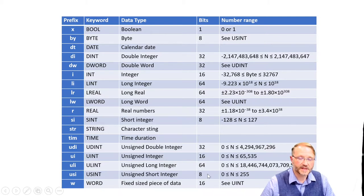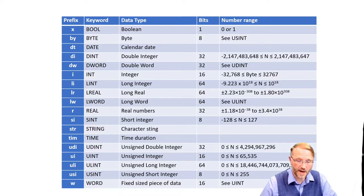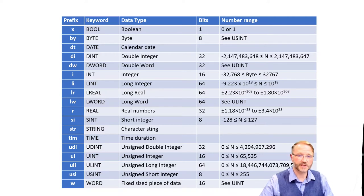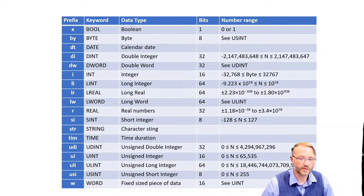These unsigned data types will hold values from 0 to 2 to the n minus 1, where n is the bit width. So for 8 bits, it holds from 0 to 2 to the 8th, which is 256, minus 1 — so that's 255. You've got to remember that minus 1, just like when you're counting: 0, 1, 2, 3, 4. And if you mess that up, you end up with an off-by-one error.